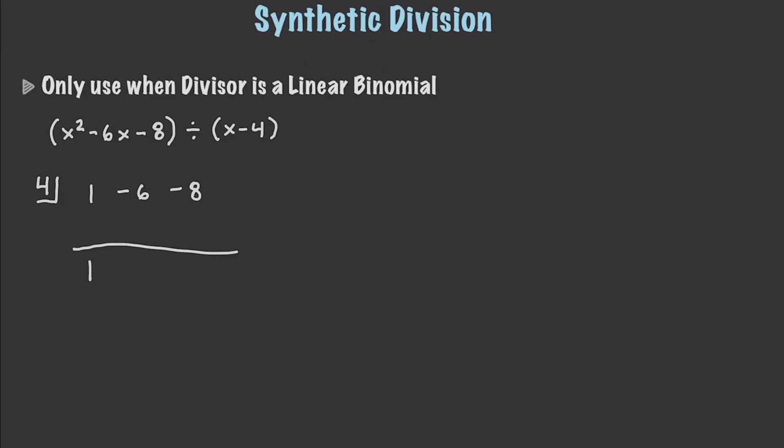Then what we do is multiply the box number by the number underneath the line. And then you put that value right here. So, 4 right here times 1 is equal to 4. We're then going to get the result of that calculation, which in this situation would be negative 6 plus 4, which is going to be negative 2. Once again, you're going to multiply the box number by the new number underneath the line. That's going to give you 8.